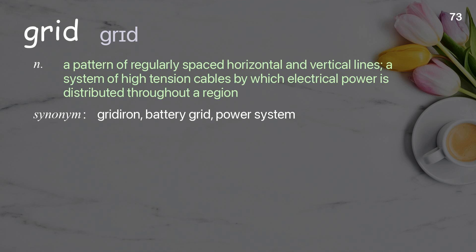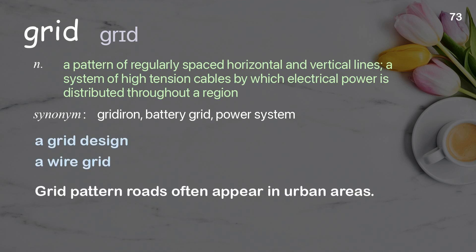Grid: a pattern of regularly spaced horizontal and vertical lines; a system of high-tension cables by which electrical power is distributed throughout a region. Examples: a grid design; a wire grid. Grid pattern roads often appear in urban areas.